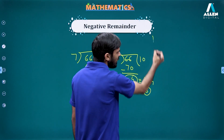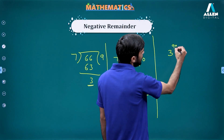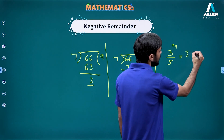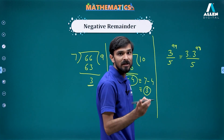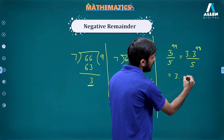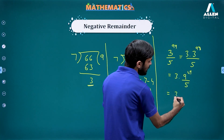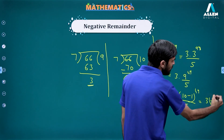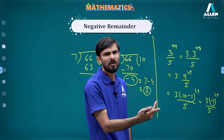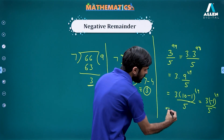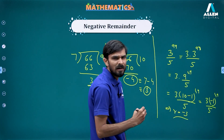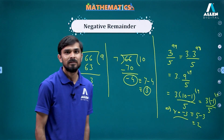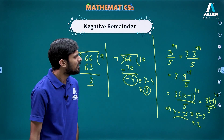Now let's revisit 3^99 divided by 5 using negative remainders. We write it as 3 times 3^98 divided by 5, then as 3 times 9^49 divided by 5. Since 9 equals 10 minus 1, we get 3 times (10 minus 1)^49 divided by 5. The remainder of 10 divided by 5 is 0, leaving minus 1 to the power 49, which is minus 1. Multiplied by 3, the remainder is minus 3, which is equivalent to 5 minus 3 equals 2 — confirming our earlier answer.